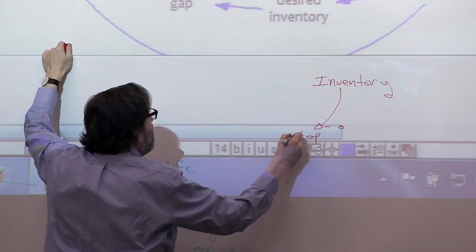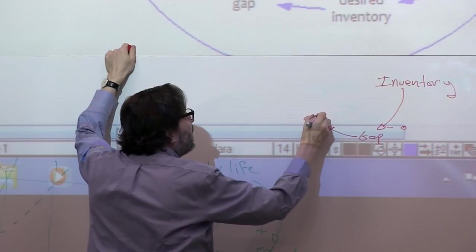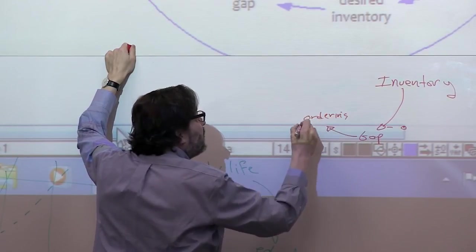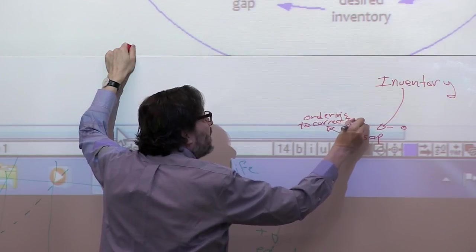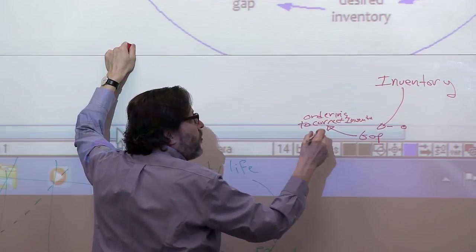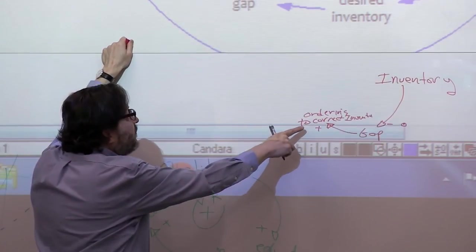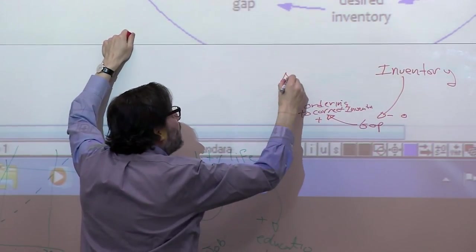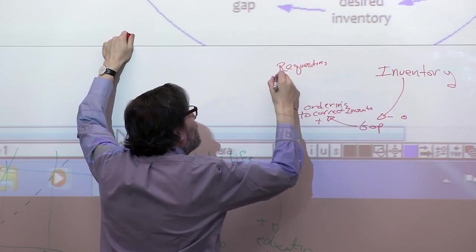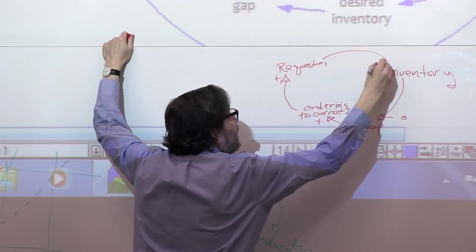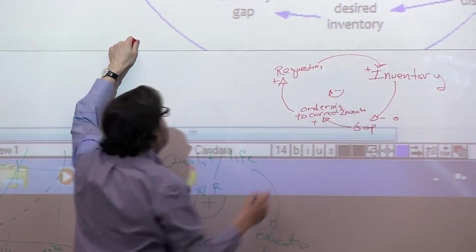As the gap goes up, the ordering to correct inventory goes up. So gap up, ordering to correct inventory is up. That's a plus. Ordering to correct inventory up, the requesting up. Requesting up, inventory up. And there's one minus sign, so that is a negative loop.